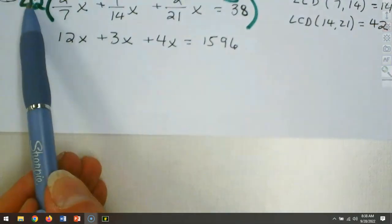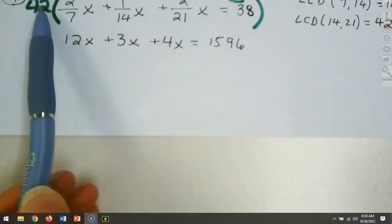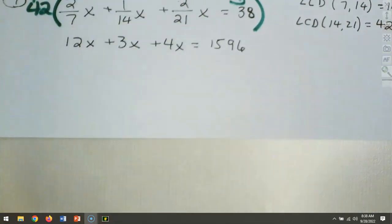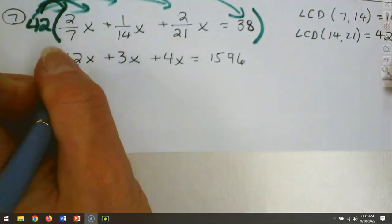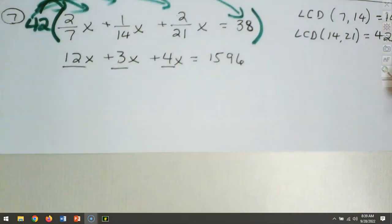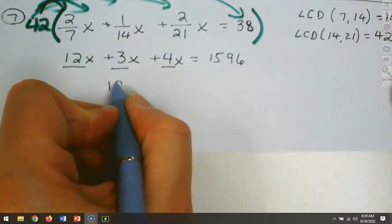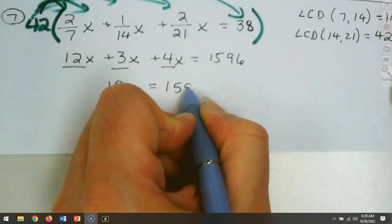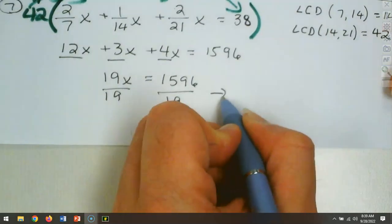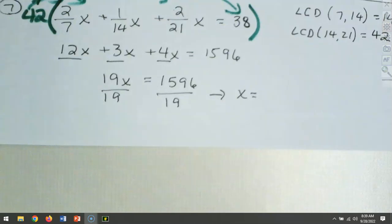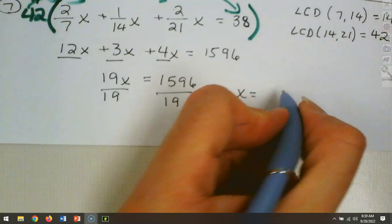Before we divide, look at the left-hand side — can we combine these x terms? Yes. The very last thing we do is divide. So: 12 plus 3 makes 15, plus 4 more makes 19x. And that equals 1596. Now the last step is to divide both sides by 19. That comes out to be a positive 84. So x equals 84.